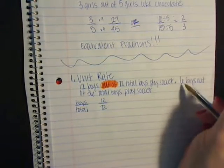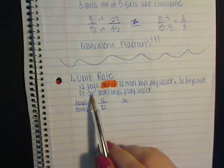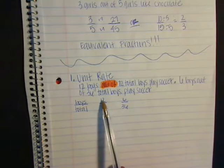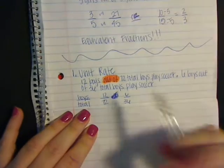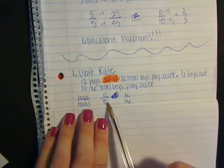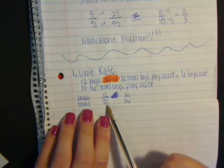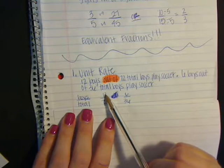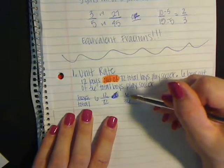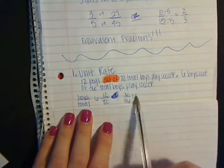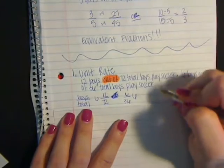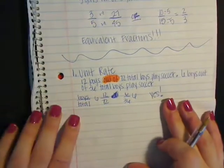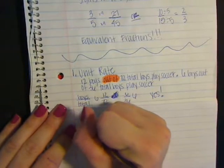Now that both rates are set up the same way — boys over total — we find the unit rate. What's 72 divided by 12? That's 6. And what's 36 divided by 6? That's also 6. Since both have the same unit rate of 6, yes, they are equivalent ratios and rates.